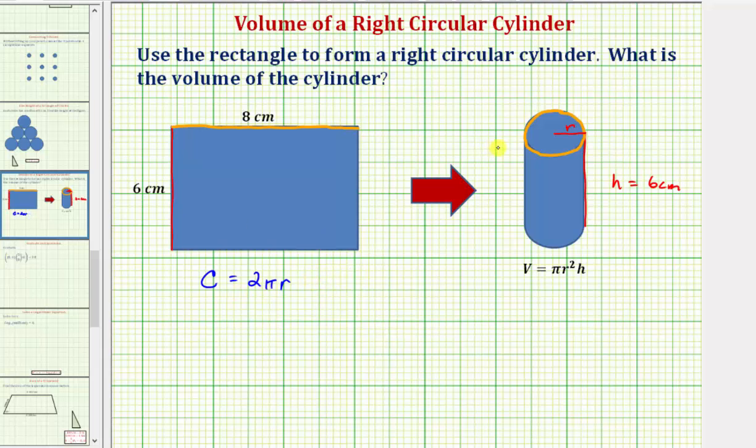And again, we know the circumference of the circle must be the same as the length of this side of the rectangle. And therefore, 2πr must equal eight centimeters.